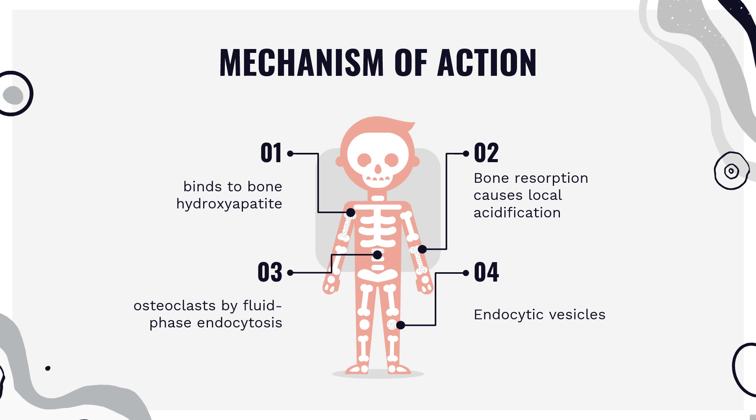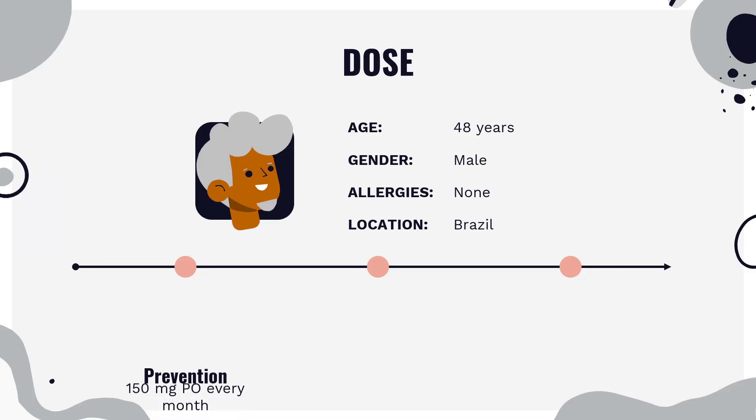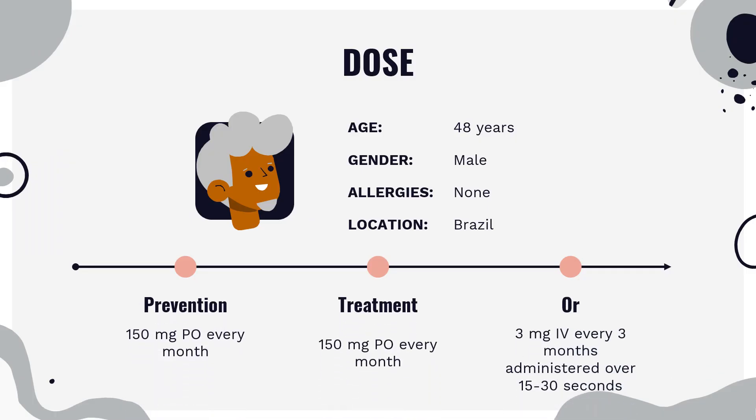Ibandronate also activates caspase-3, which contributes to apoptosis. Half-life: The half-life of Ibandronate in post-menopausal women ranges from 37 to 157 hours. Dose — Osteoporosis: Indicated for treatment and prevention of osteoporosis in post-menopausal women; increases BMD and reduces vertebral fracture incidence. 150 mg PO every month, or 3 mg every 3 months administered over 15 to 30 seconds (treatment only).